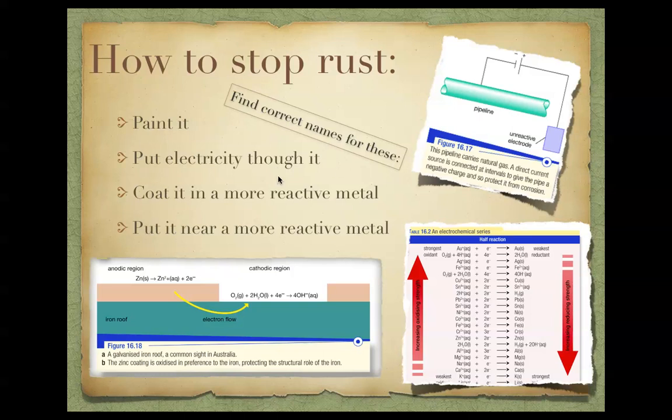Putting electricity through it. This is called cathodic protection. Because what you're doing is putting electricity into it. You're reversing the flow of electricity. So what it does is reverses the flow of electricity so you no longer get the electrons which are leaving the iron. So cathodic protection is when you put electricity through it.